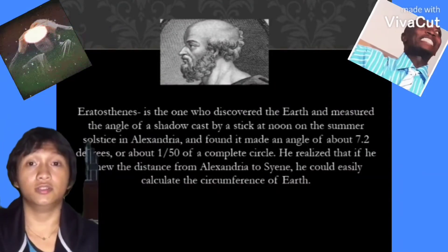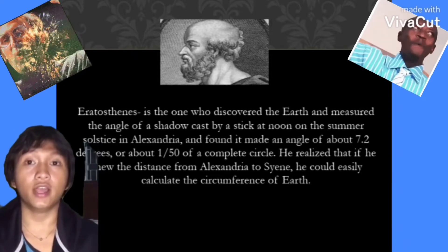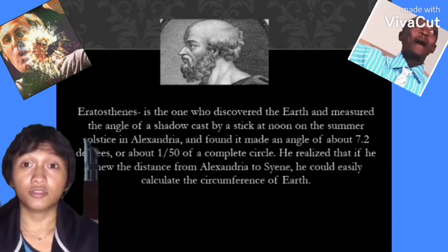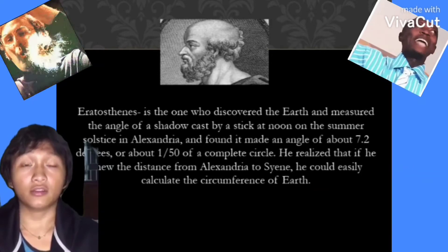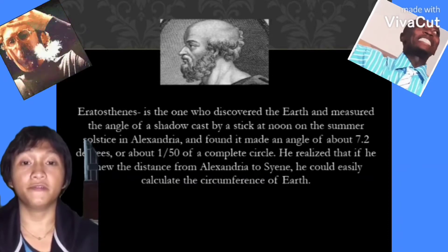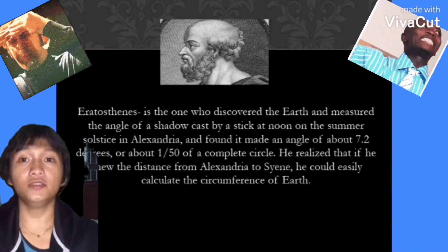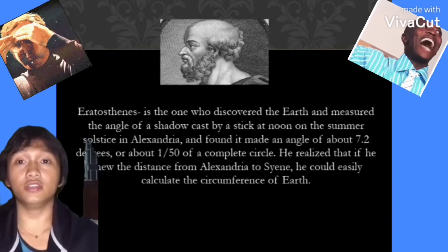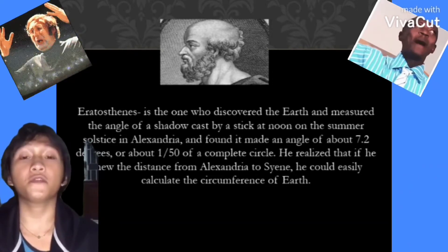Now for Eratosthenes, he is the one who discovered the Earth's circumference. He measured the angle of the shadow cast by a stick at noon on the summer solstice in Alexandria, and found it made an angle of about 7.2 degrees, or about 1 over 50 of a complete circle. He realized that if he knew the distance from Alexandria to Cain, he could easily calculate the circumference of the Earth.